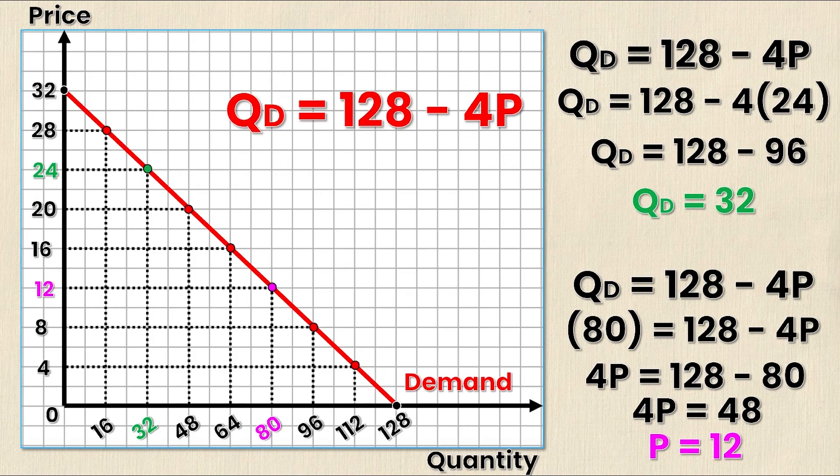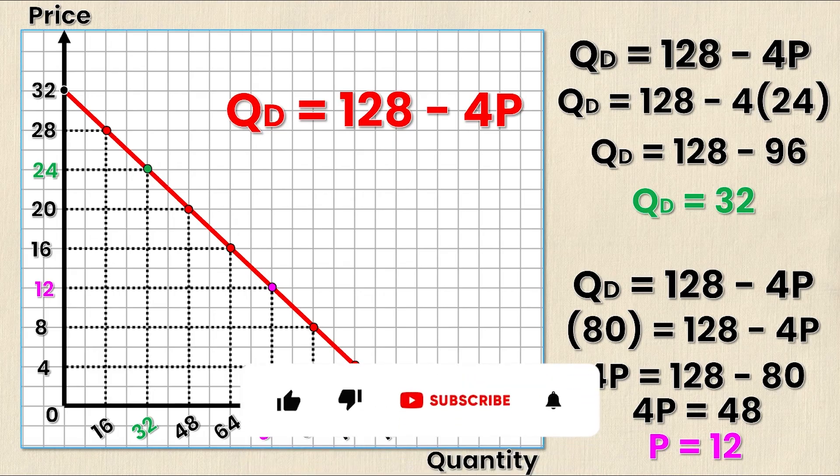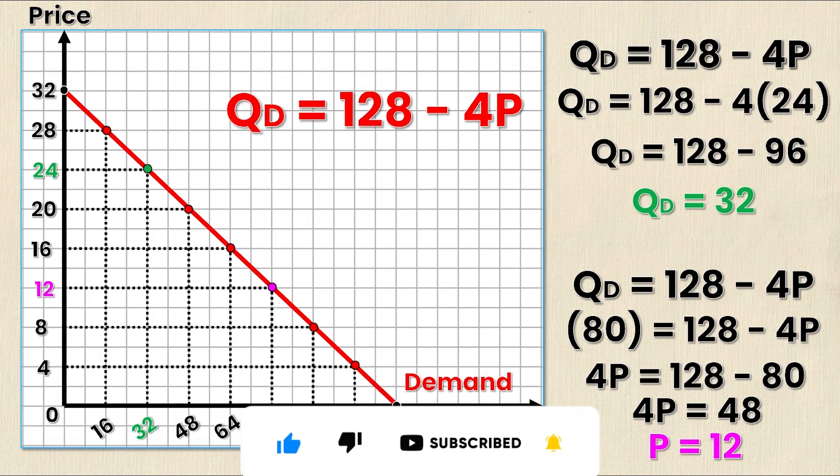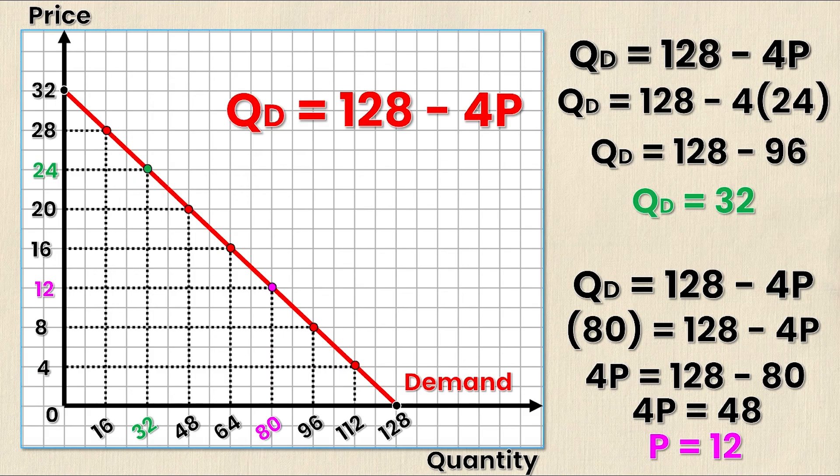Even with all of the values I have on the table right now this is not an exhaustive list. In fact you could find an infinite number of values between a price of 0 and a price of 32 as well as between a quantity of 0 and a quantity of 128. The possibilities are endless, you just need to sub them in to the demand equation and then solve for the other value.